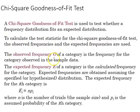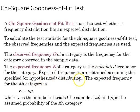The observed frequency O of a category is the frequency for the category observed in the sample data, and the expected is the calculated frequency — the expected frequency is obtained assuming a specified or hypothesized distribution. Our hypothesis testing will determine what that is.